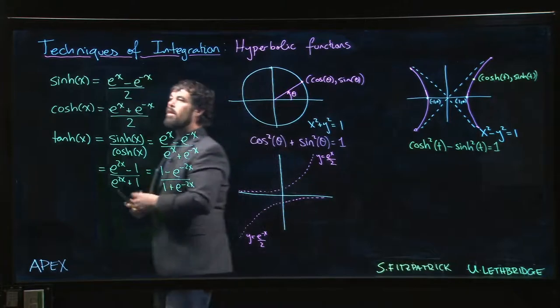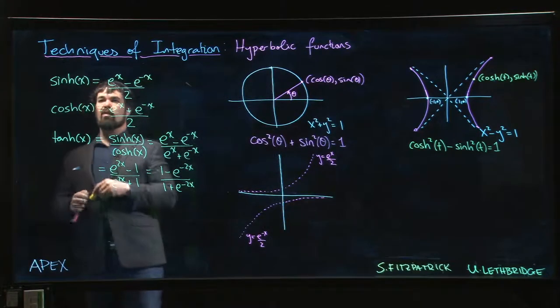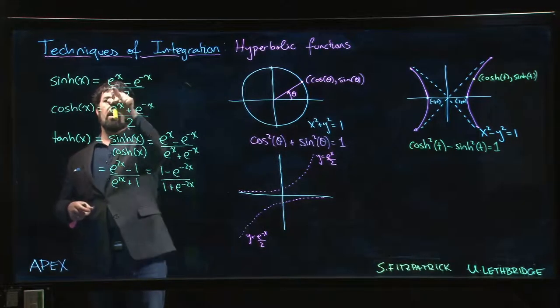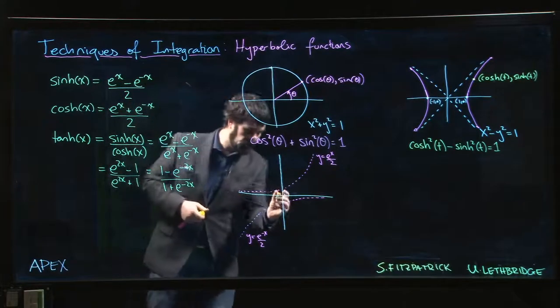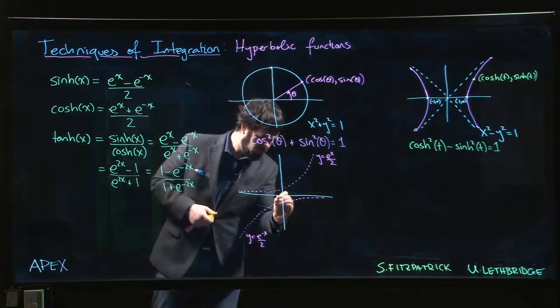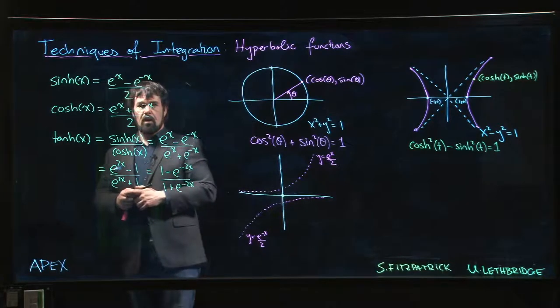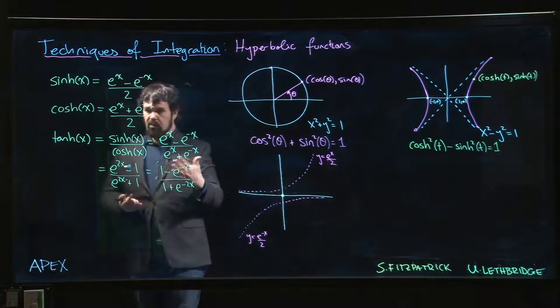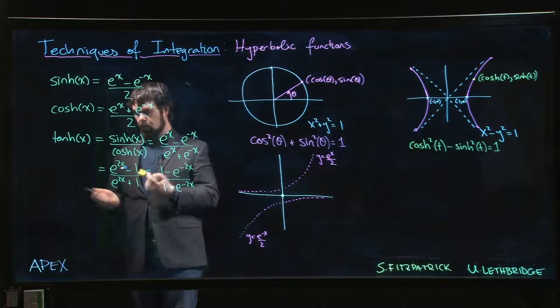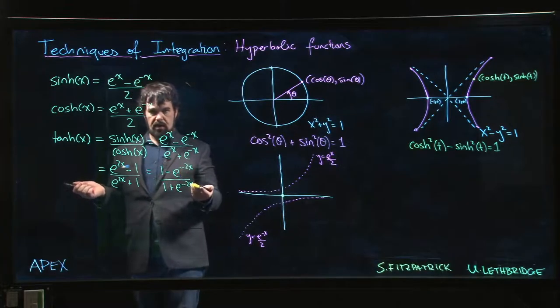Now, it's pretty easy to see that hyperbolic sine at 0 is 0 - 1 minus 1, I get 0 - so we know it has to pass through the origin there. Then we might want to know, well, what's the slope as it passes through the origin? Well, we know how to get that - take the derivative.